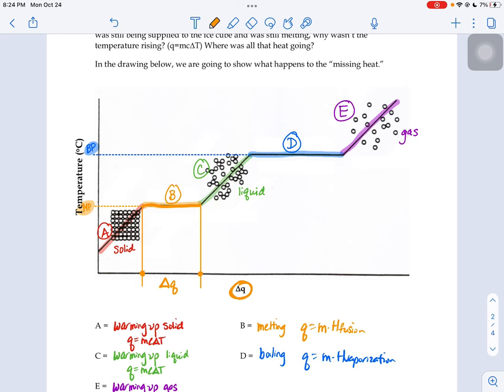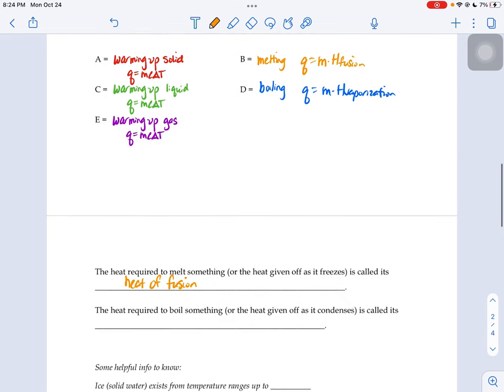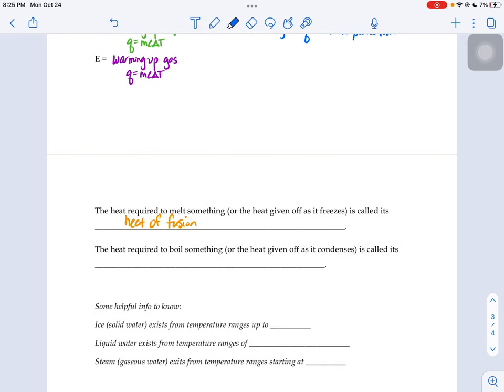But if we went the other direction from right to left, wouldn't the delta Q, this number, be the exact same? It would just be that you're releasing energy instead of absorbing energy. So the value is the same, it's just the signage that would be different. So that's why it says the heat needed to melt something or the heat given off, it's the same value. It's just positive if you're melting, negative if you're freezing.